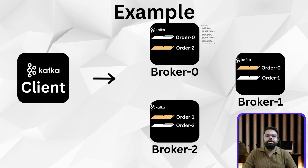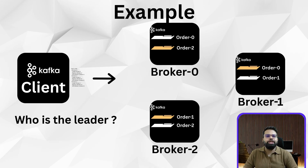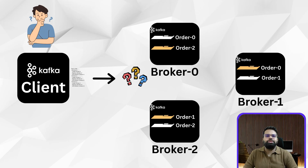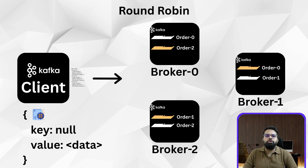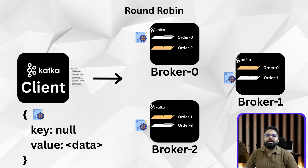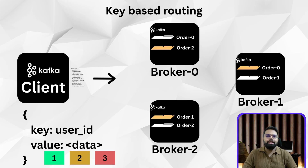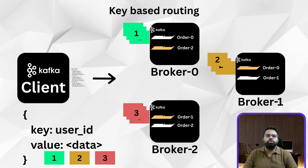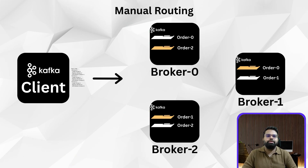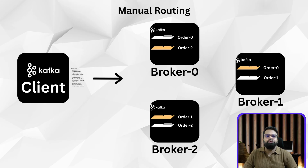When your app wants to send an event to the orders topic, the Kafka client first asks the cluster for metadata. Once it has this info, the producer has to make a choice: which partition should the message go to? Kafka provides three strategies. First, round robin — if you don't specify a key, Kafka distributes messages evenly. Second, key-based routing — you provide a key like user ID or order ID, and Kafka always sends related messages to the same partition. Third, manual — you can explicitly choose the partition, but this is rare in practice.